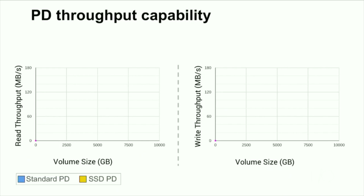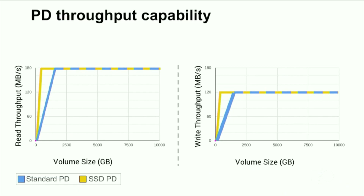Moving from IOPS to throughput — same pattern here. Performance grows with space for both options. Unlike the IOPS graphs, however, you can see that SSD PD's advantage in throughput is less dramatic. Both standard and SSD PD can hit the VM throughput limits at moderate sizes. This explains why we recommend standard PD for throughput-oriented applications that have low IOPS. While SSD PD has a much better cost per IOPS, standard PD has the better cost for throughput. Please check the latest documentation as we're always striving to raise the per VM caps on throughput.